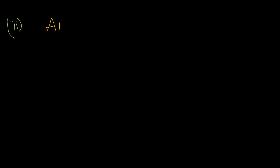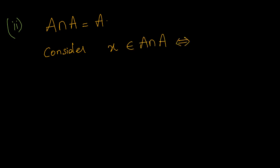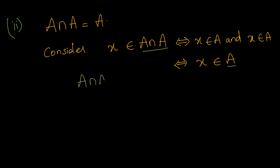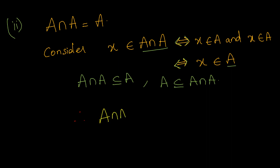So now let us see the second law: A intersection A must be equals to A. To prove this, in the same way I will be considering the left hand side. Let us take one element x belonging to A intersection A. Intersection means the element should be present in both the sets. So x belongs to A and x also belongs to A. Since one element x is in set A and A, I can conclude x belongs to A. Therefore A intersection A is a subset of A. With the help of the if-and-only-if statement, A is also a subset of A intersection A. So with the equality of sets, A intersection A must be equals to A.